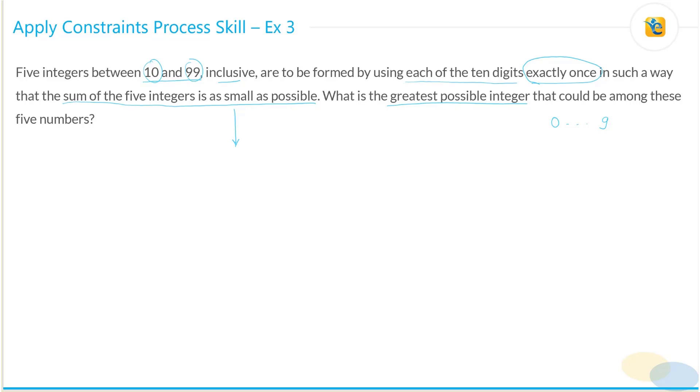What is the greatest possible integer that could be among these five numbers? Now if there were no constraints, the greatest possible integer would have been 99. But there are two constraints over here.